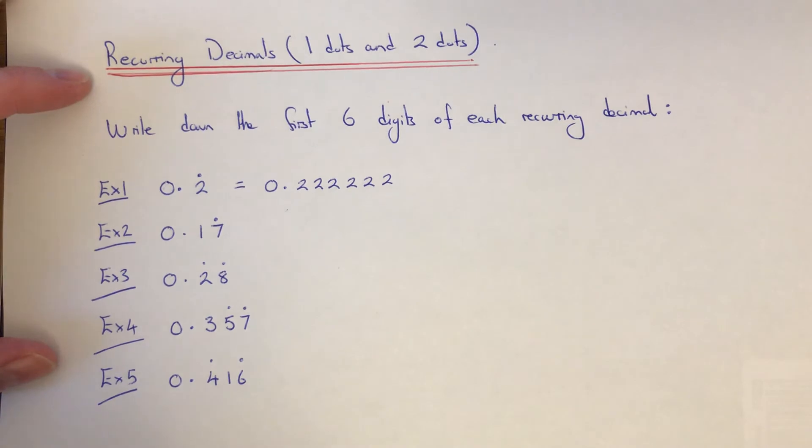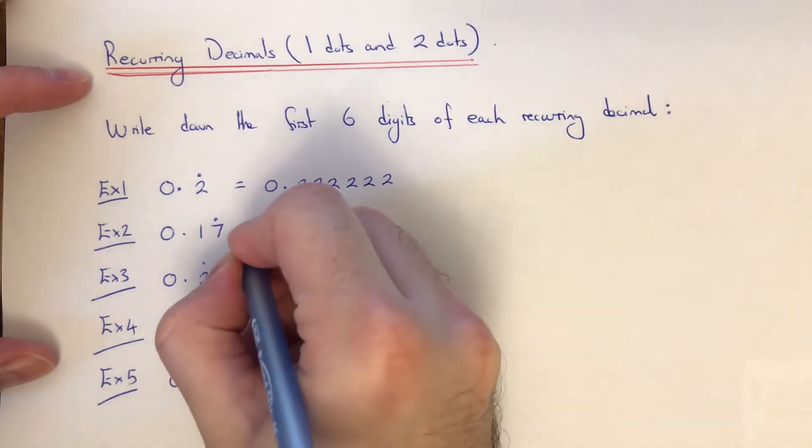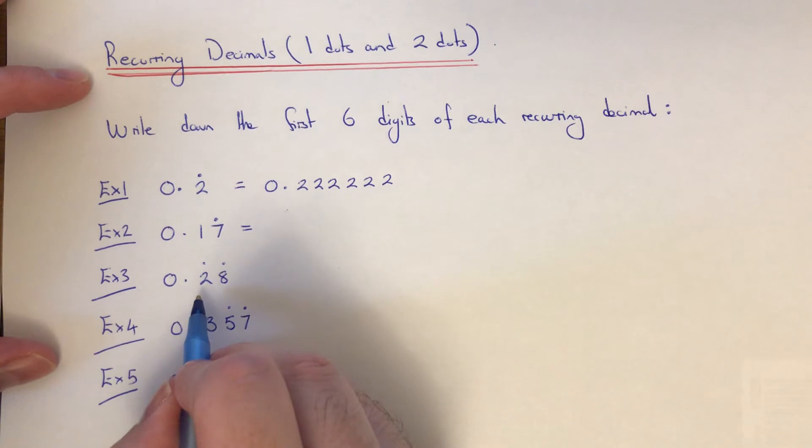Just want six digits after the decimal point. The second one just has the dot on the seven, so this means that the seven just gets repeated like so.